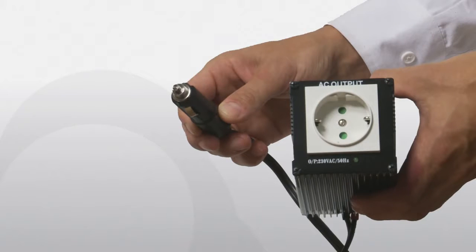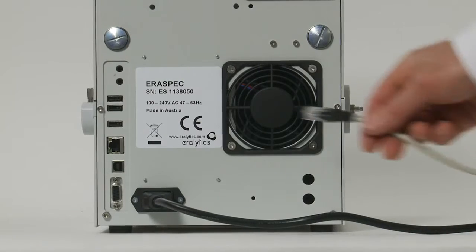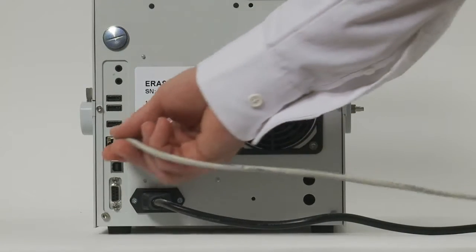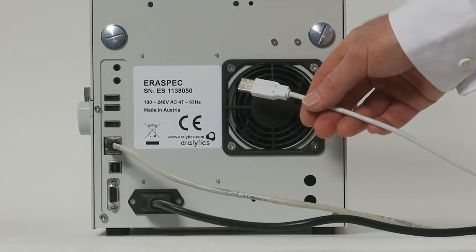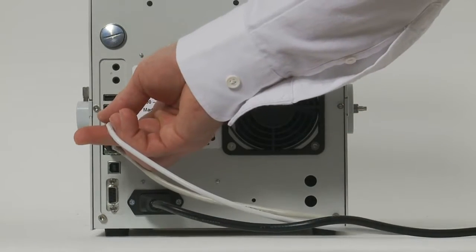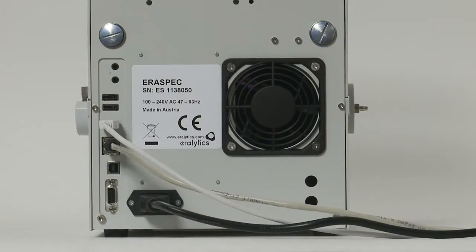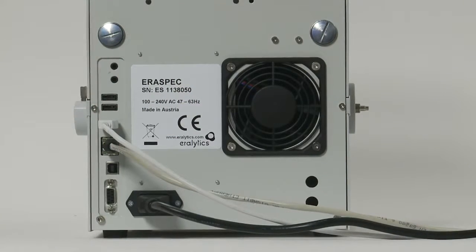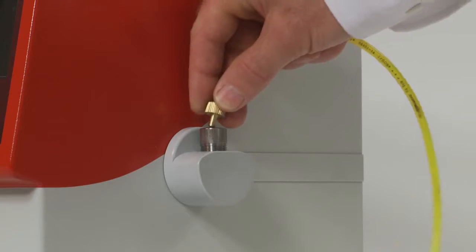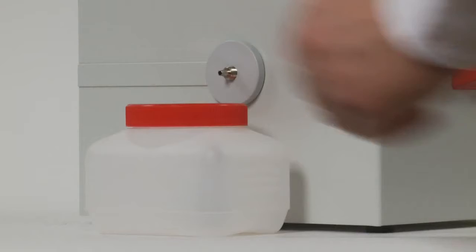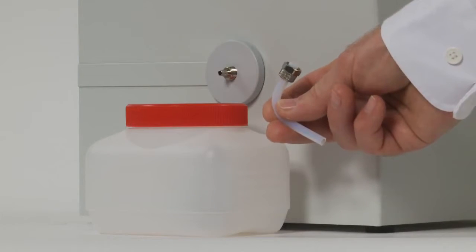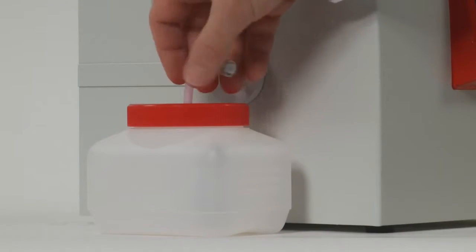For data transfer or remote control, the unit can be connected to a network by the Ethernet interface or directly to a computer or printer using the USB ports. Put the inlet tube in the Luer inlets on the right side of the instrument. Then place the waste container next to the instrument and connect the outlet tube to the outlet on the left side.